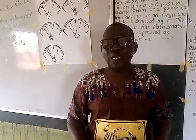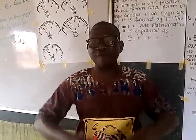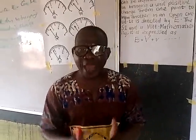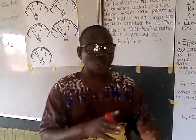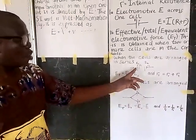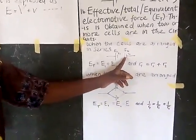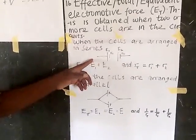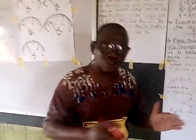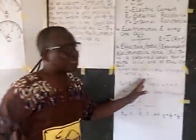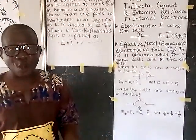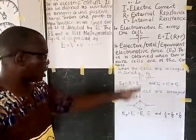When you have more than one cell, you arrange them either in series or in parallel. In series arrangement, you connect positive to negative: the negative of one cell is joined to the positive of the next cell, and so on. This is called series arrangement of cells.